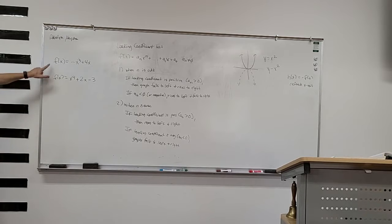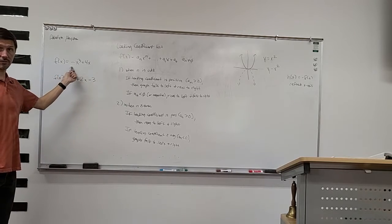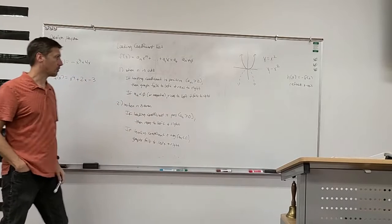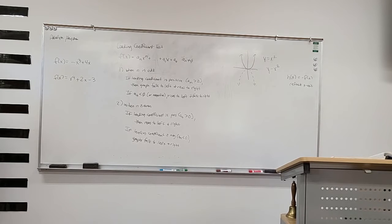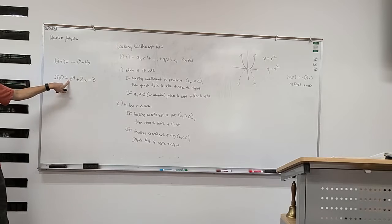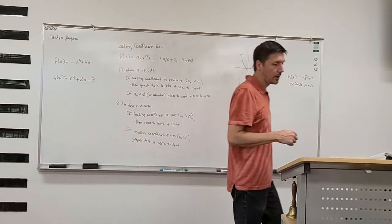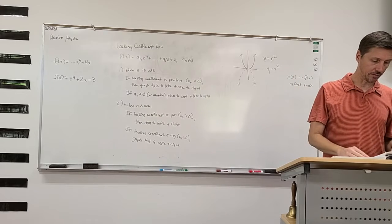With what we know about the leading coefficient test: for an odd-degree polynomial with a negative coefficient, it rises to the left and falls to the right. For an even-degree polynomial with a positive coefficient, it rises to the left and to the right. These rules help us eyeball a function and understand what it's going to do on the outer edges.